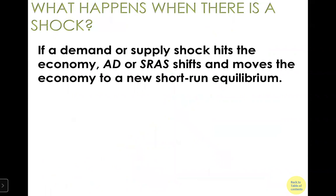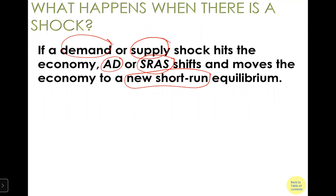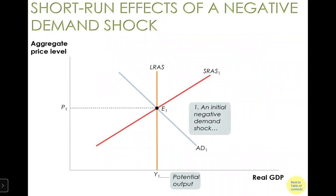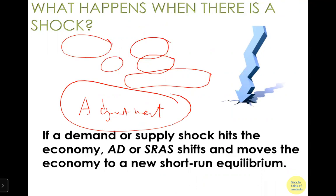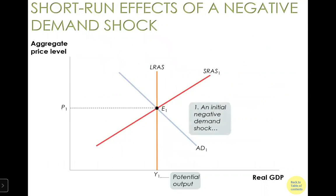We are now ready to use the demand-supply equilibrium model to understand what happens if there is a shock to the economy — whether a demand shock or a supply shock. We will see how equilibrium adjusts through demand-side or supply-side. The economy moves to a new short-run equilibrium, but eventually it returns to long-run equilibrium through adjustment.